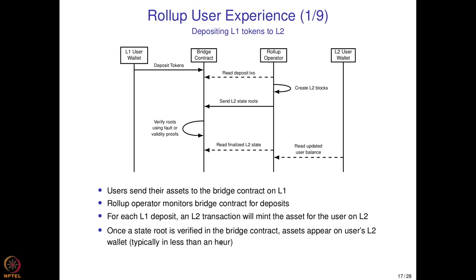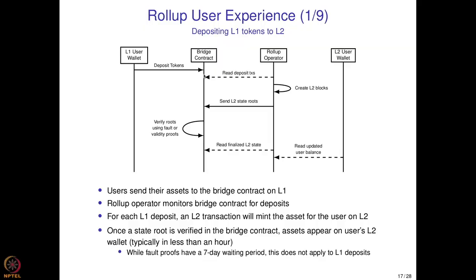Once you deposit, the rollup operator reads the deposit transactions, creates an L2 block, and mints the equivalent amount of tokens on layer 2. The state root of that block is sent to the bridge contract, and once verified, the user balance is updated. Typically this takes about an hour — in a previous demo it took about 20 minutes. The 7-day waiting period in optimistic rollups does not apply to layer 1 deposits, because fault proofs are only needed when the L1 contract does not have visibility into what is happening on layer 2.